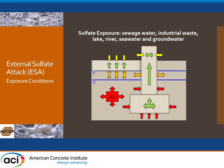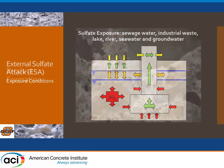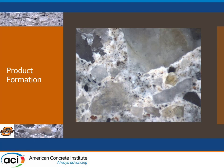External sulfate attack: if we have a buried structure or any type of structure exposed to a source of sulfates — it can come from groundwater or industrial processes — our concrete is exposed to those sulfates. The sulfates enter the concrete through pores in solution, migrate through the structure, and cause changes in the cementitious phases all around the aggregates.